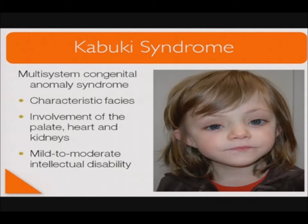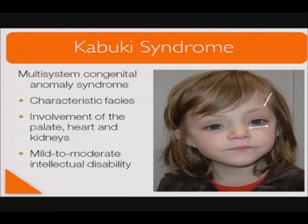Kabuki syndrome is a multi-system congenital anomaly syndrome whose defining features are characteristic facies. These facial features are illustrated in the photo of the young girl on the right, with long palpebral fissures and high-arched eyebrows that are often interrupted and sparse to the side. Other characteristic features may include prominent ears and a depressed nasal tip. Systemic involvement frequently includes cleft palate, cardiovascular malformations, and renal anomalies.